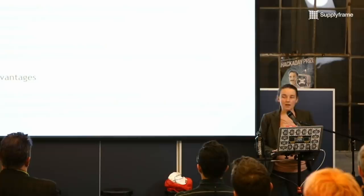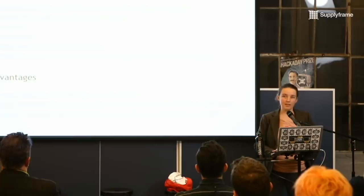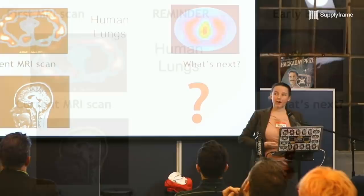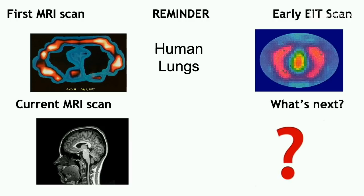Just to go back to the first MRI scan — this is an MRI scan of a thorax, a cross-section through the ribs — and that's what we have now. That's actually my brain from back when I was an MRI technician. And then this is an early EIT scan of the same thorax region of the lungs. So the question for EIT is: what's next and how much can we improve it?